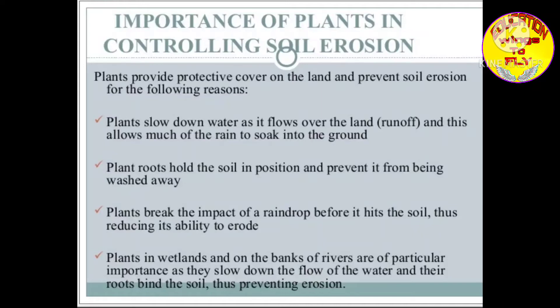After watching this activity we can conclude that plants provide a protective cover on the land and prevent soil erosion for the following reasons: plants slow down water as it flows over the land, allowing much of the rain to soak into the ground; plant roots hold the soil in position and prevent it from being washed away; plants break the impact of a raindrop before it hits the soil, reducing its ability to erode. Plants in wetlands and on river banks are of particular importance, as they slow the flow of water and their roots bind the soil, thus preventing erosion.